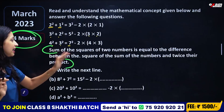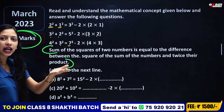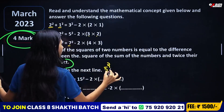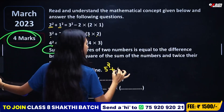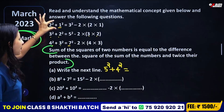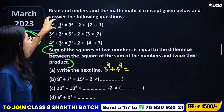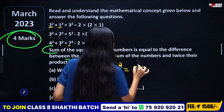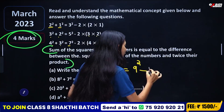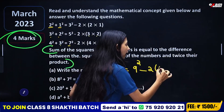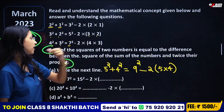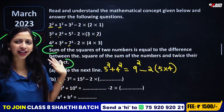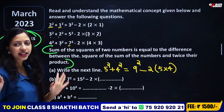Write the next line. The two numbers are 5 and 4. The sum of these two numbers is 9, so 9 squared. Twice their product is 2 into 5 into 4. Therefore, 5 squared plus 4 squared is equal to 9 squared minus 2 into 5 into 4. This is the next line following the same pattern.